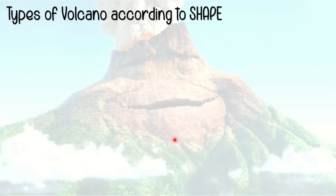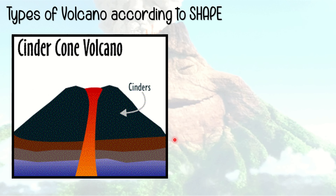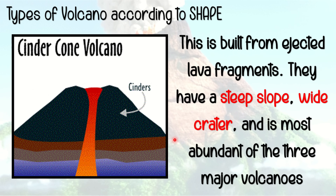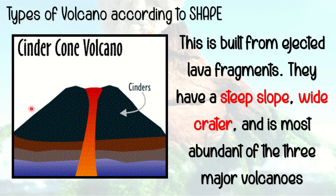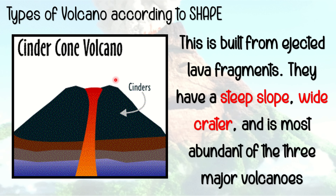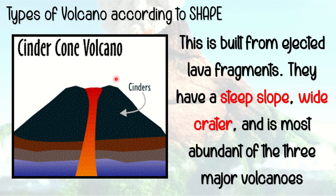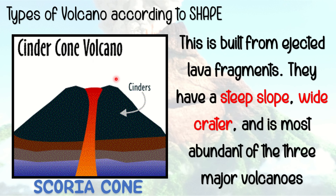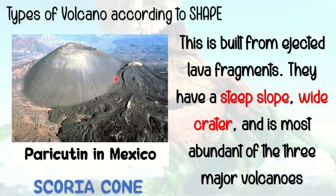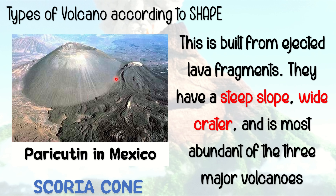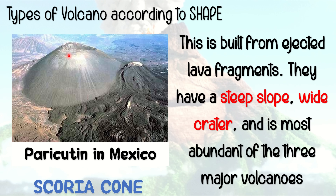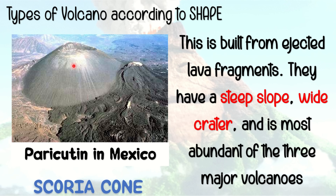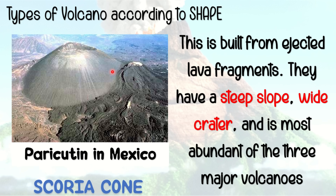The second type is the cinder cone volcano. This is built from ejected lava fragments. They have steep slopes, wide craters, and are the most abundant of the three major volcano types. It is also known as scoria cone. An example is Mount Parícutin in Mexico, which has steep slopes and a wide crater — characteristics of a cinder cone volcano.